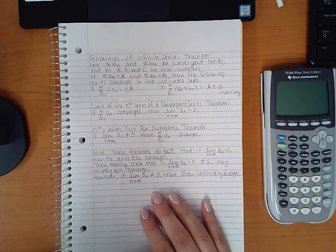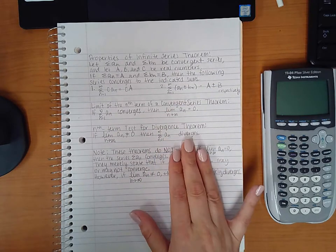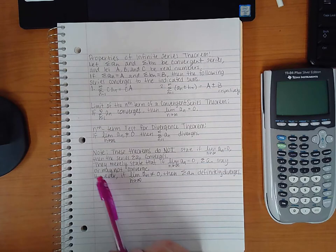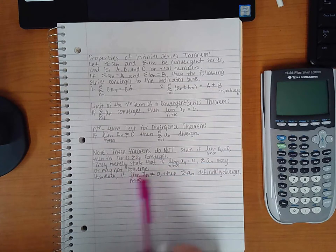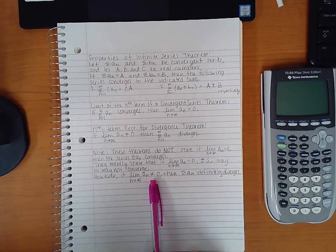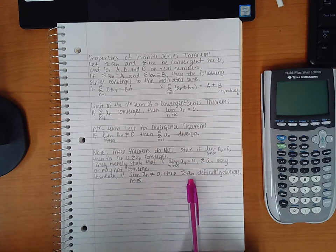So this is a big thing here; we're going to use it a lot. So again, this is just stating what I said: if the limit equals zero then the series may converge or it may not converge.